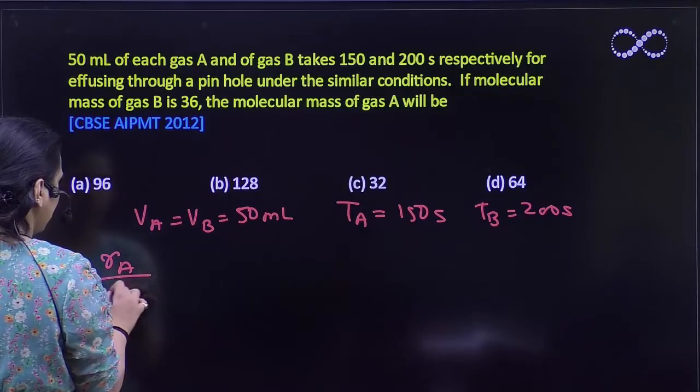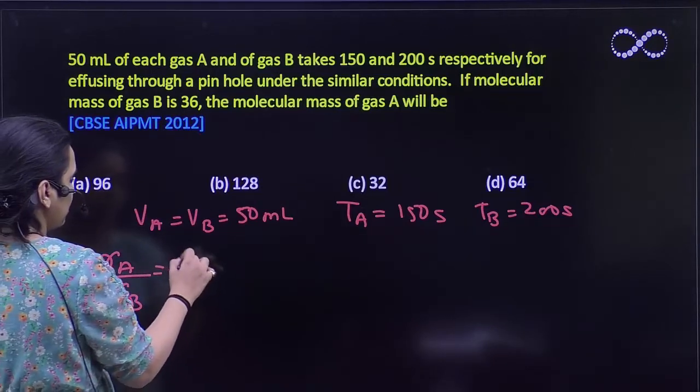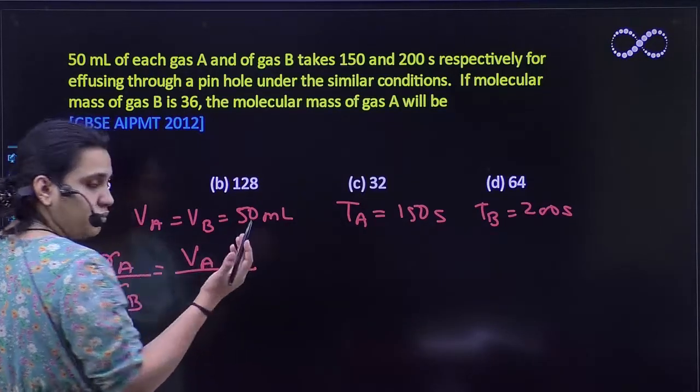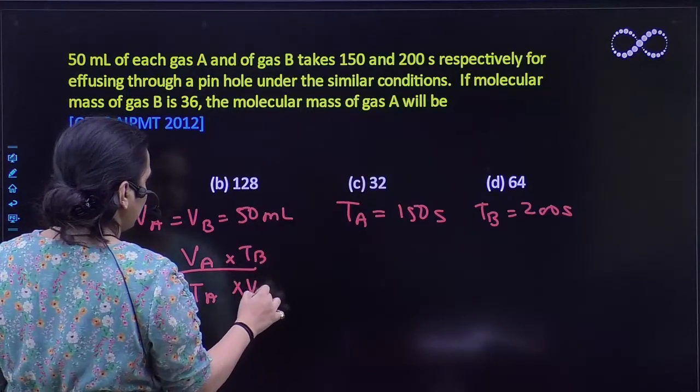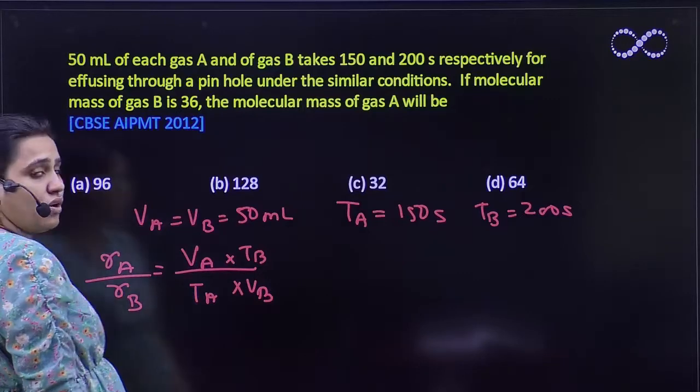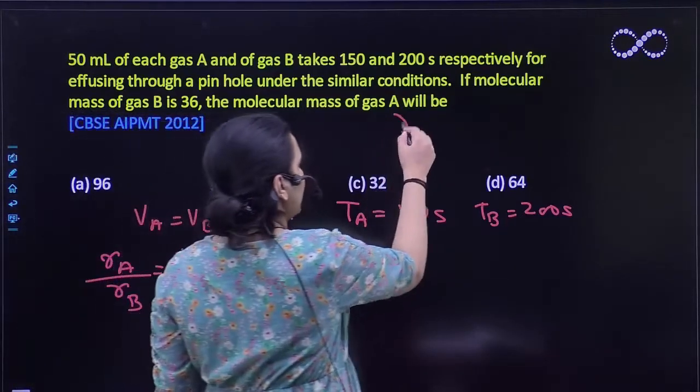Rate of effusion of A to rate of effusion of B will be equal to volume by time. According to Graham's law of diffusion, the rate of diffusion of A to rate of diffusion of B...